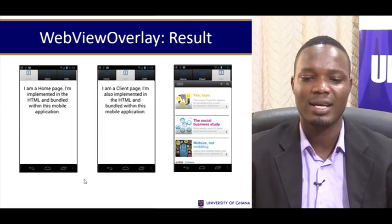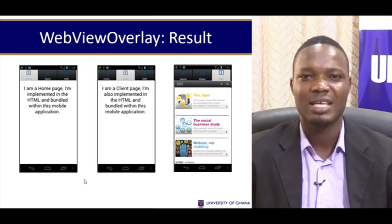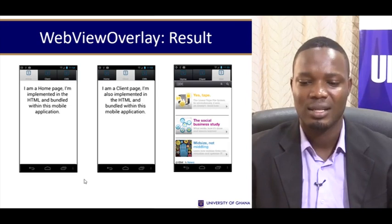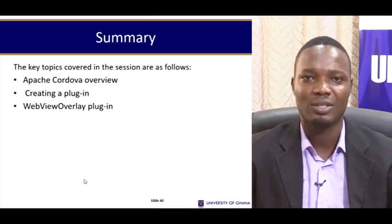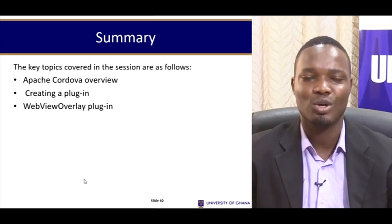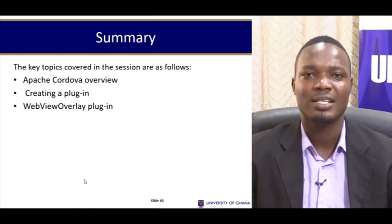When this is run, the results shown on screen are seamless — the user hardly notices they are using a different functionality; it just looks like an inbuilt thing. This brings us to the end of this section. We've looked at Apache Cordova, how to create our own plugin using its functionality, and finally how to integrate an external source from a web application into our mobile application.